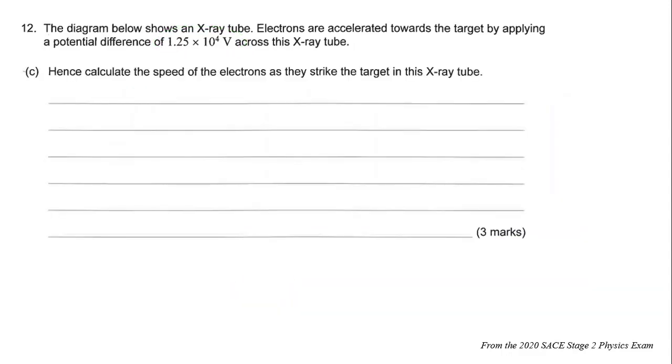Calculate the speed of the electrons as they strike the target in this X-ray tube. This is a good example of where the question has gone outside of the maximum frequency formula for an X-ray and actually gone to the use of some information from the earlier motion and two dimensions and energy and momentum topic.